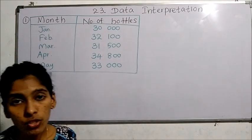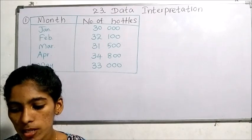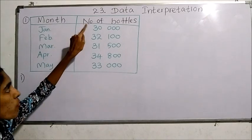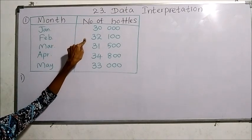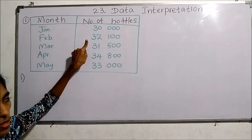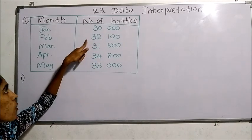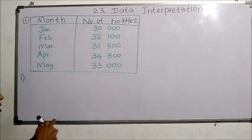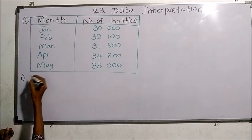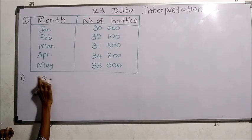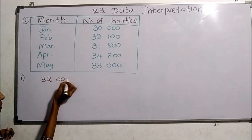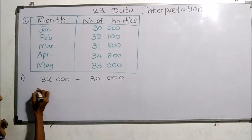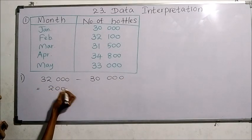The first question is: how many more bottles were sold in February than January? We can see that in the month of February more bottles are sold than January. So they are asking how many more — that means we need to subtract, we need to get the difference. In the month of February 32,000 bottles were sold. From that you subtract the number of bottles sold in January, so it's 2,000 bottles.